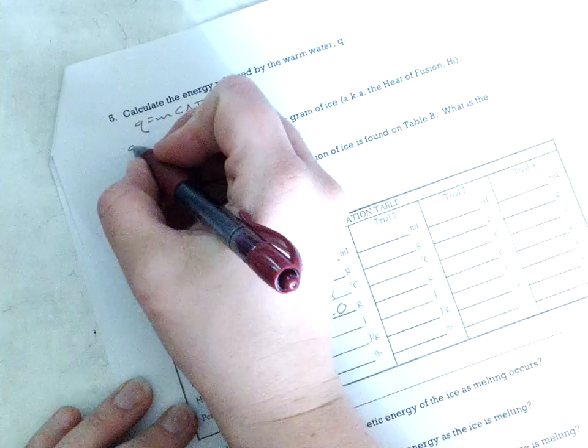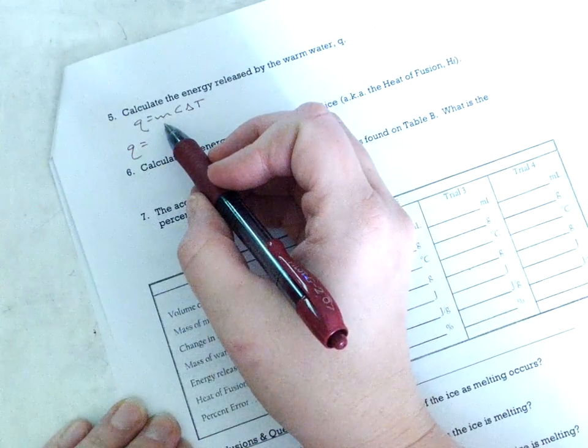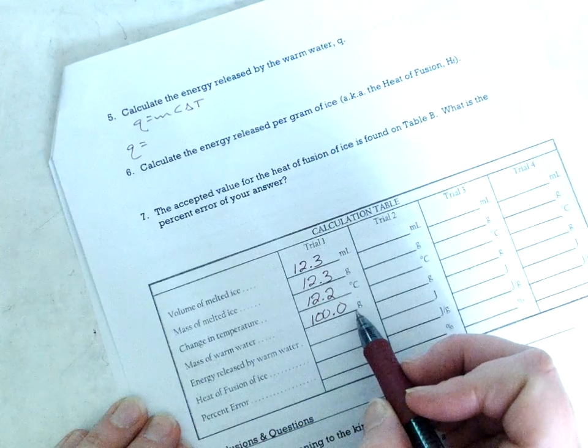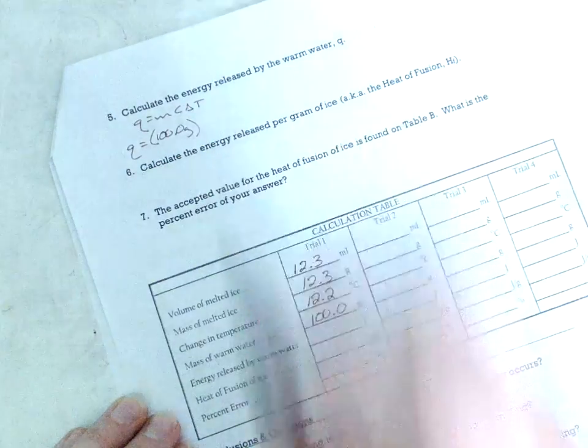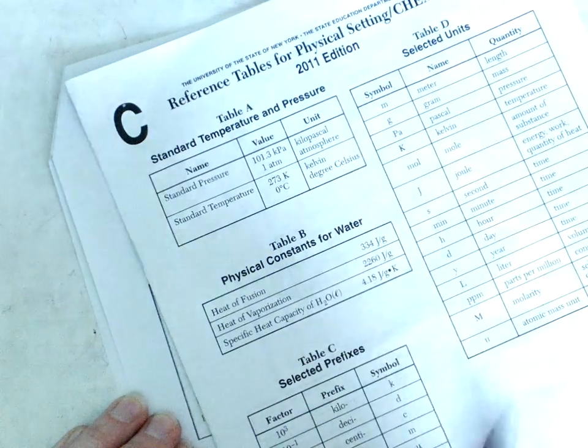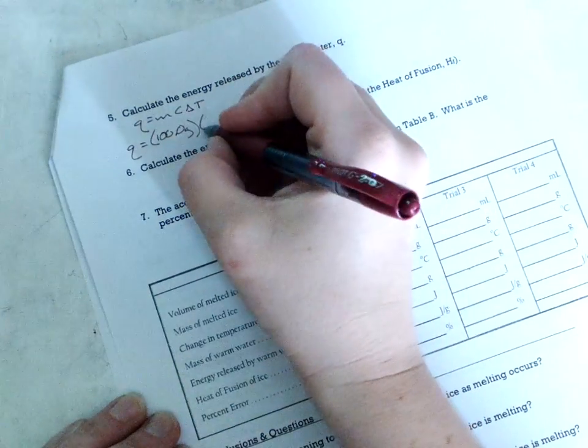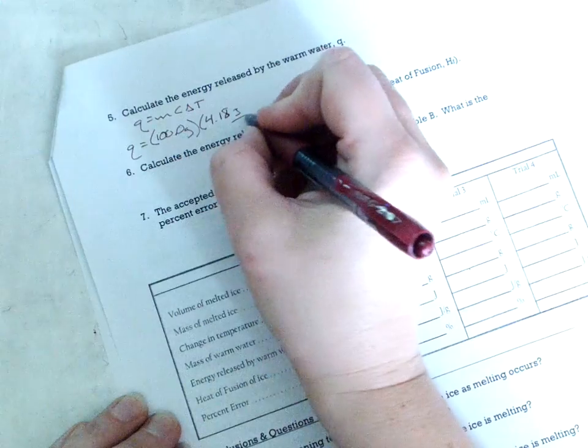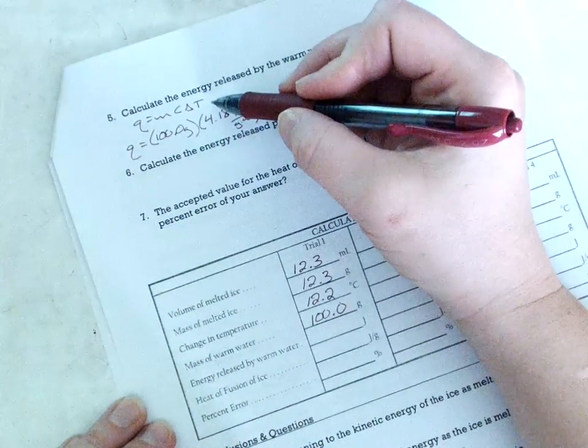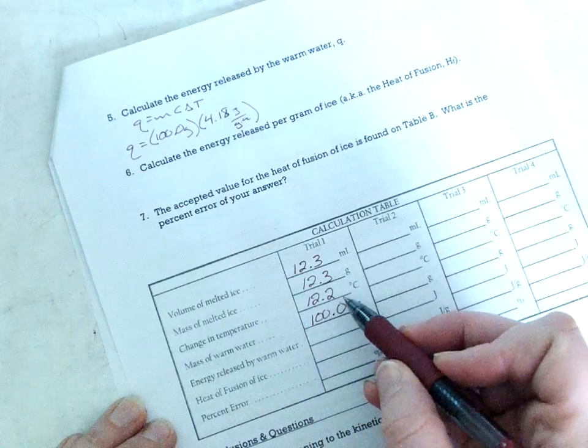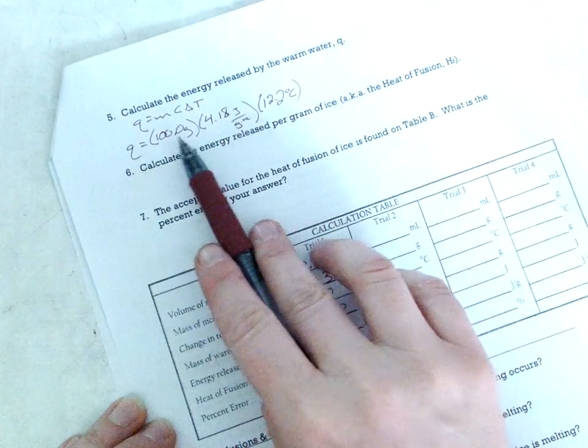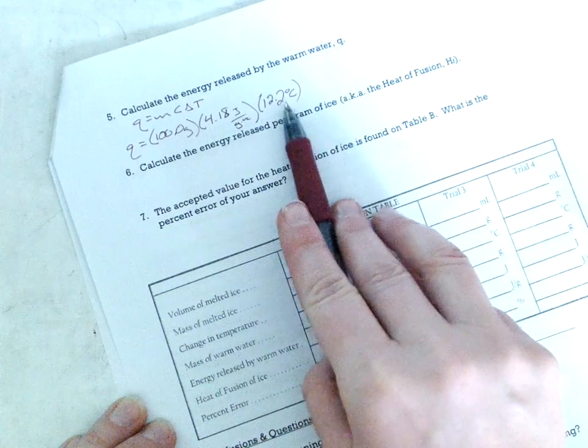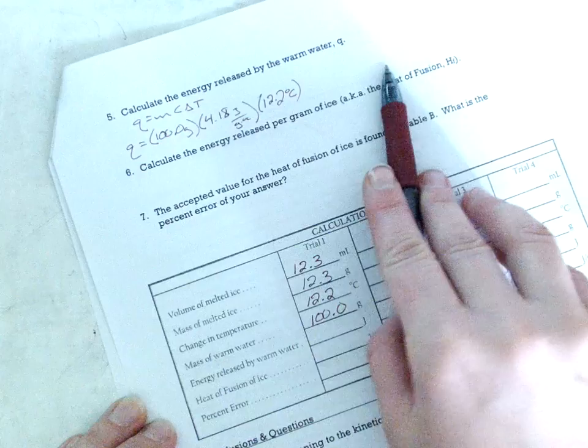You do have four trials but here's me doing the first trial. I don't know Q. That's clearly what I'm looking for. Be careful here the M is the mass of the warm water. Mass of warm water 100.0 grams. C is the specific heat capacity of water 4.18 and delta T is the change in temperature. For this trial it's 12.2. Now don't keep doing this over and over again. These two numbers will be the same for your other trials but the change in temperature will be different for every trial.